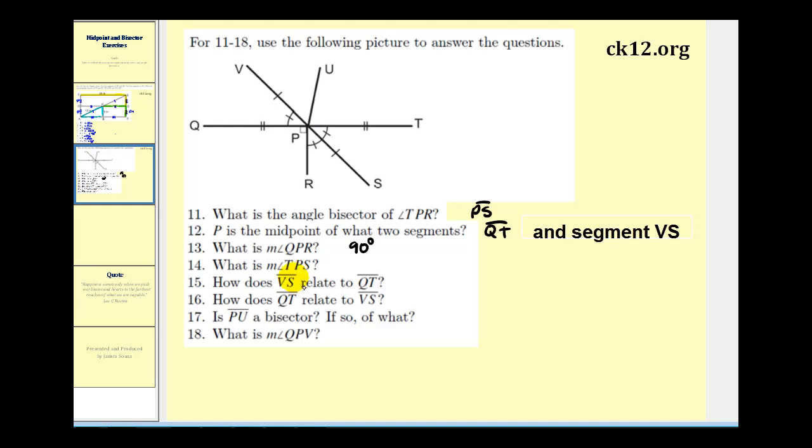Number 14, what is the measure of angle TPS? Angle TPS is this angle here, and from the previous question we know that angle QPR is 90 degrees. It's also a linear pair with angle RPT, so angle RPT would have to be 90 degrees, and since segment PS bisects angle RPT, if we divide 90 degrees by two, angle RPS and angle SPT would have to be 45 degrees.